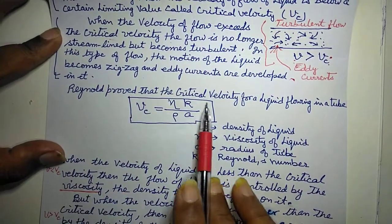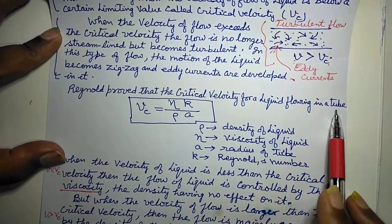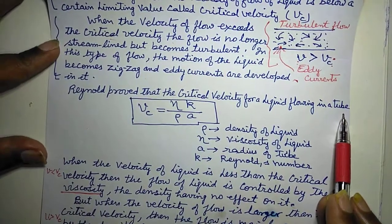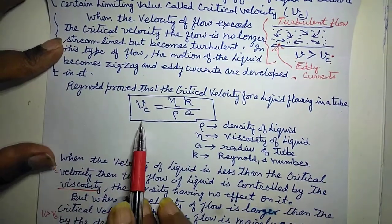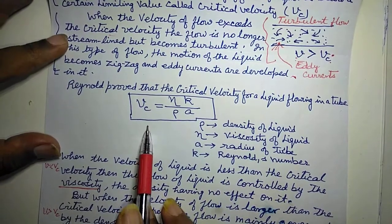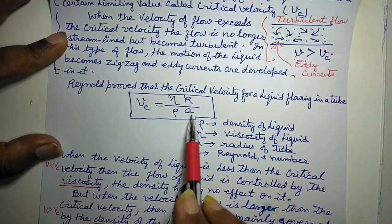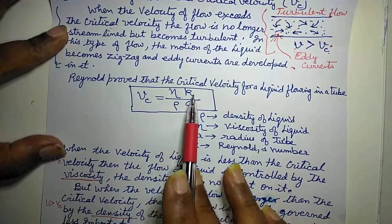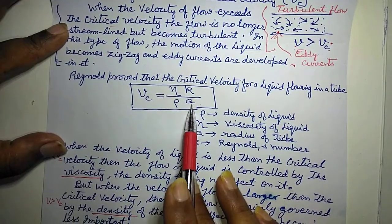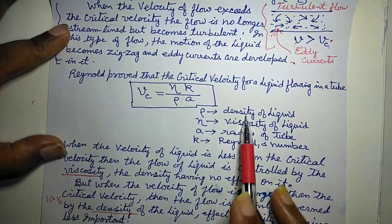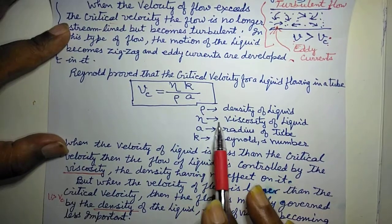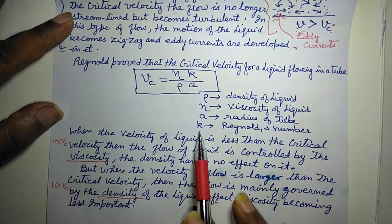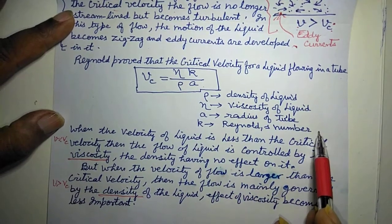Reynolds proved that critical velocity for a liquid flowing in a tube — Reynolds saab ne bataya hai ki jo critical velocity vc hai, yeh hoti hai eta k upon rho. Toh critical velocity is eta k upon rho, jahan par rho hai density of the liquid, eta hai viscosity of the liquid, a hai radius of the tube, aur k kehlaata hai Reynolds' number.